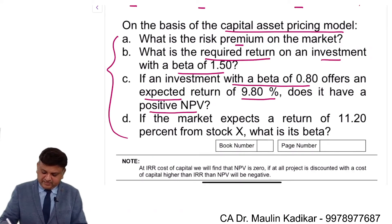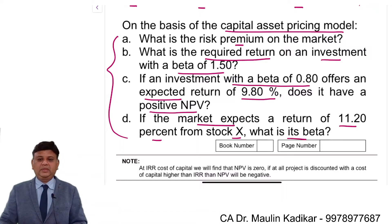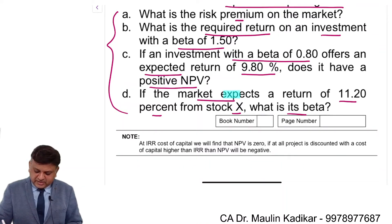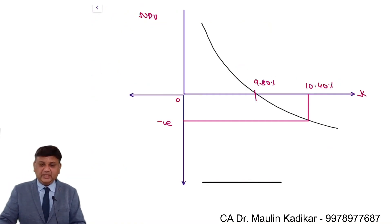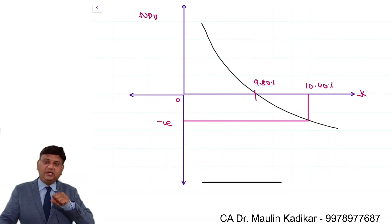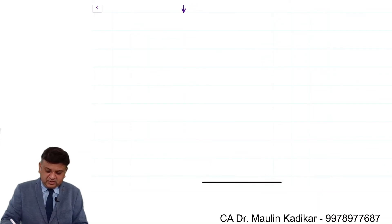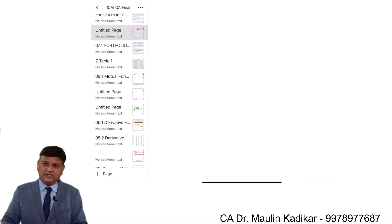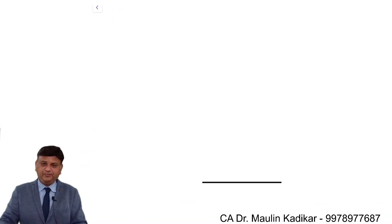Part D question: if the market expects a return of 11.2% from stock X, what is its beta? Here the expected return is to be understood as the required rate of return, because the question does not separately provide information to compute it. So D question answer uses the CAPM formula: RF plus beta into (RM minus RF).